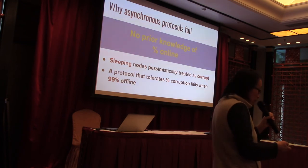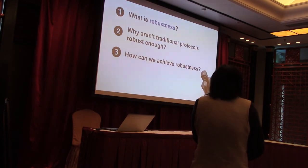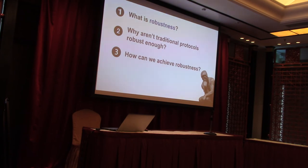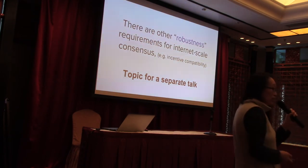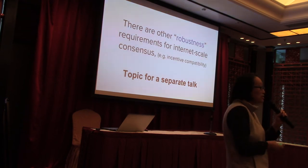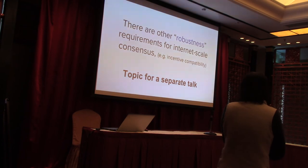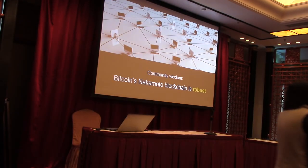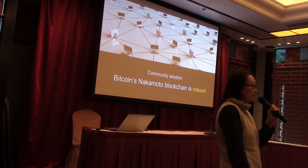To quickly recap: I have explained one specific notion of robustness and why classical protocols all fail. Now I'll talk about how we can achieve this robustness. We draw inspiration from cryptocurrencies — the community's wisdom is that Bitcoin's Nakamoto consensus is very, very robust.